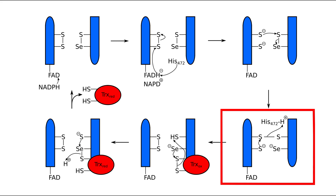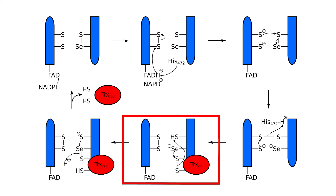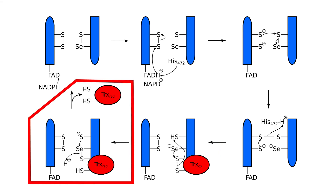The thiolate then abstracts the hydrogen from the histidine. At this point, the C-terminus redox center swings to be much closer to the substrate binding site, where an oxidized thioredoxin will bind. The selenolate attacks the disulfide of thioredoxin, forming a selenyl sulfide bond and a thiolate on thioredoxin, which then abstracts the proton from the thiol of the C-terminus redox center of thioredoxin reductase. The thiolate then attacks the selenyl sulfide bond, restoring the C-terminus center to its oxidized state and fully reducing thioredoxin, which is then released and abstracts a proton from solution.